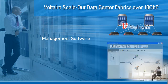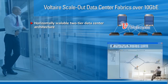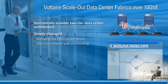Voltaire scale-out fabrics over 10 Gigabit Ethernet provide a flat data center architecture along with the management software to make it work for you. While the infrastructure can scale horizontally to thousands of nodes with all traffic paths utilized concurrently, you benefit from a single point of management that simplifies and automates fabric administration in a way never seen before.